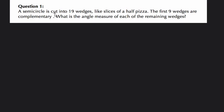In this problem, they tell us a semicircle is cut into 19 wedges like slices of a half pizza. The first nine wedges are complementary. What is the angle measure of each of the remaining wedges?